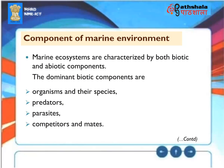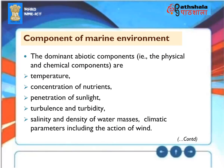Component of Marine Environment: Marine ecosystems are characterized by both biotic and abiotic components. The dominant biotic components are organisms and their species, predators, parasites, competitors, and mates. The dominant abiotic components — the physical and chemical components — are temperature, concentration of nutrients, penetration of sunlight, turbulence and turbidity, salinity and density of water masses, and climatic parameters including the action of wind.